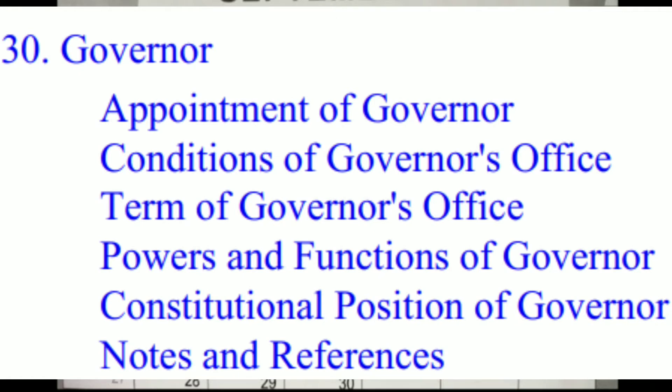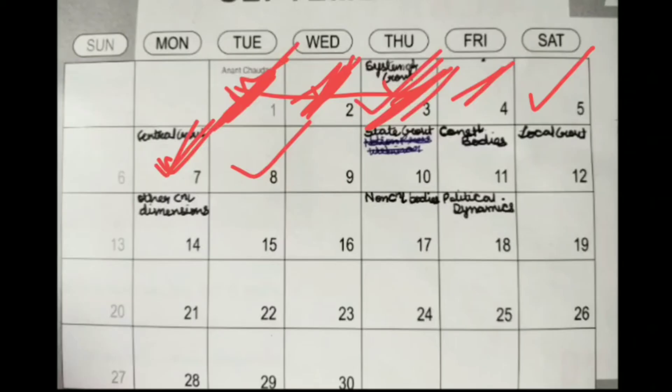On day eight, you complete chapter 30 — Governor — which is like an introduction to state government. The state part won't take much time because you're mostly revising, finding the differences from central government, and redoing what's left. Governor is around 10 to 12 pages.